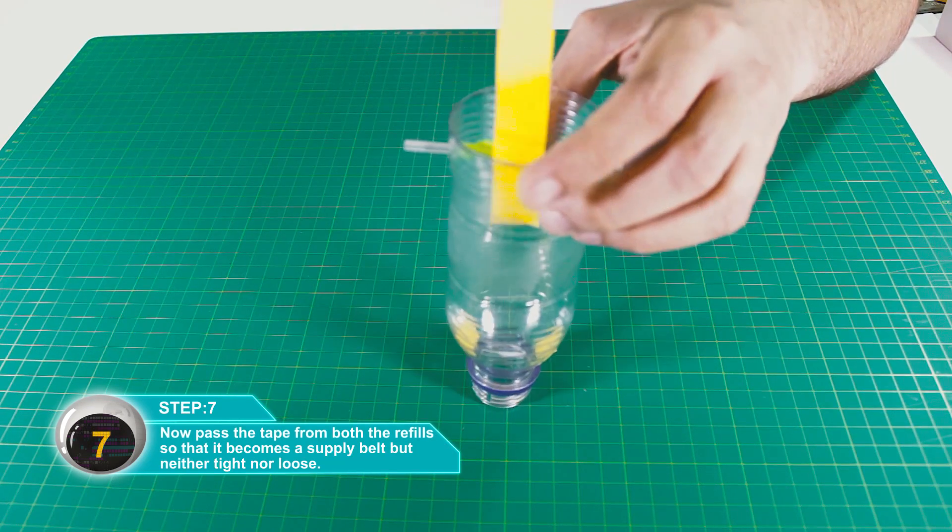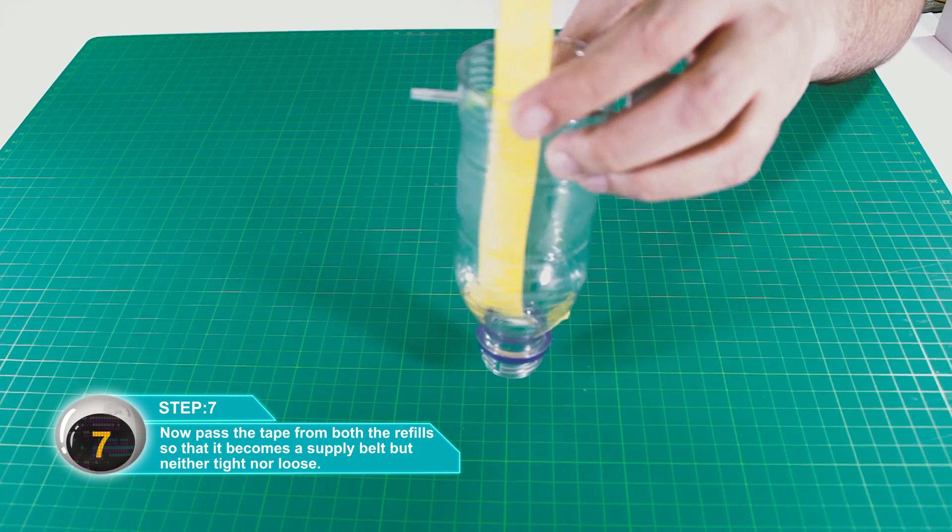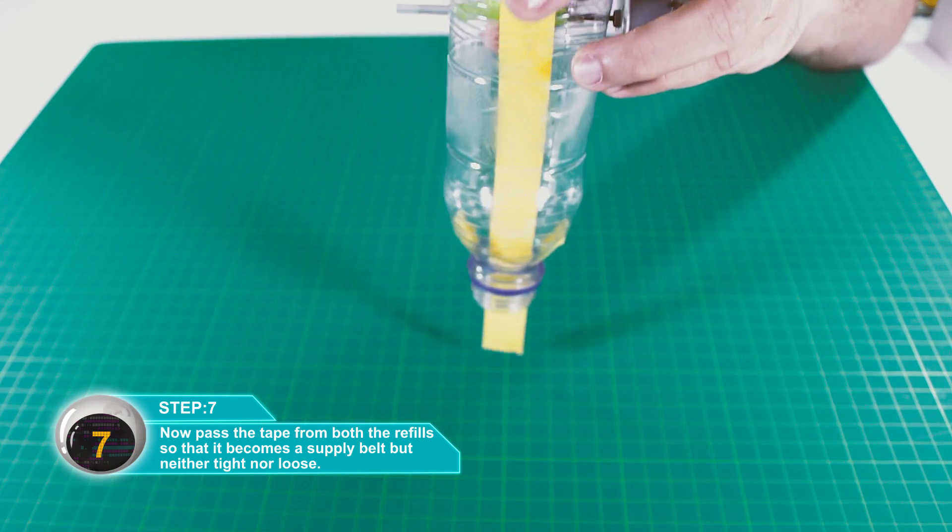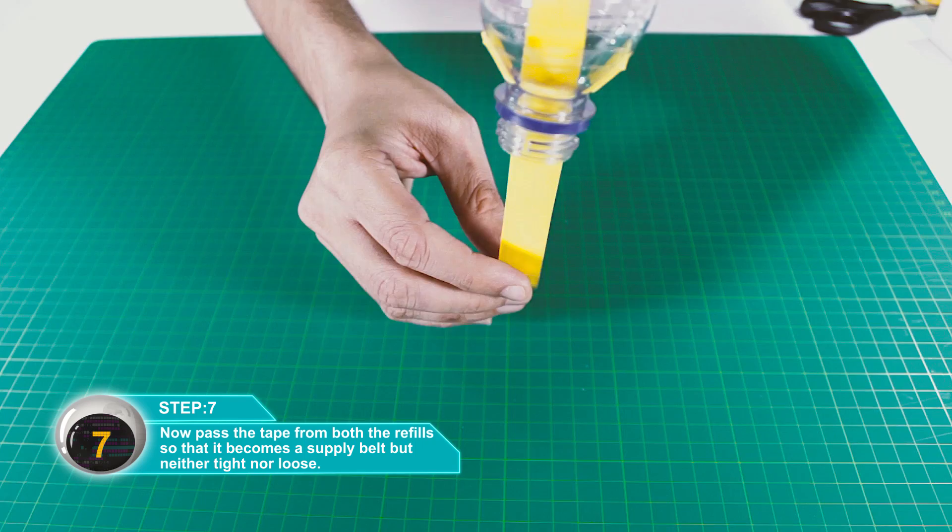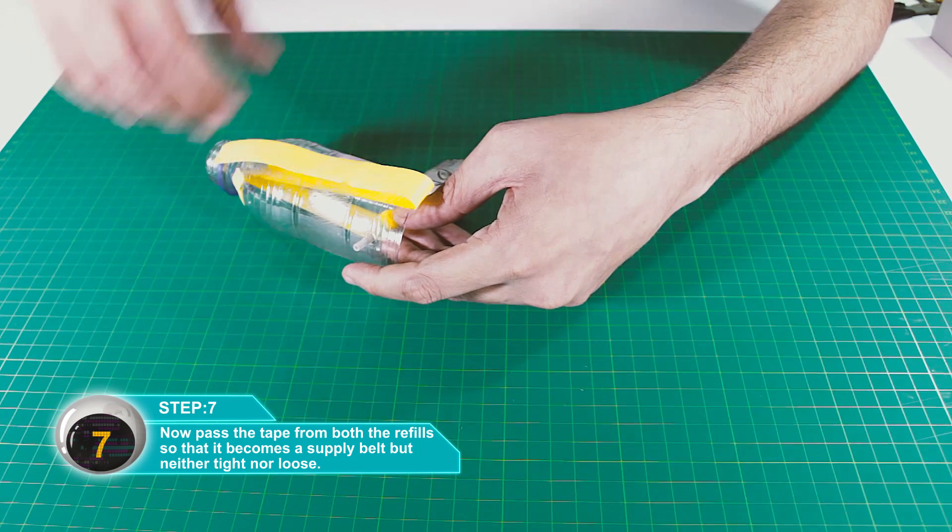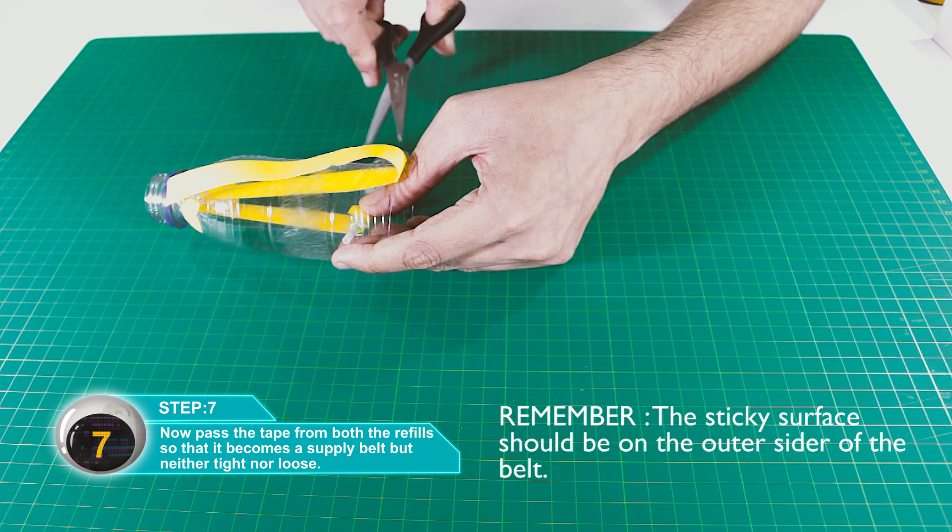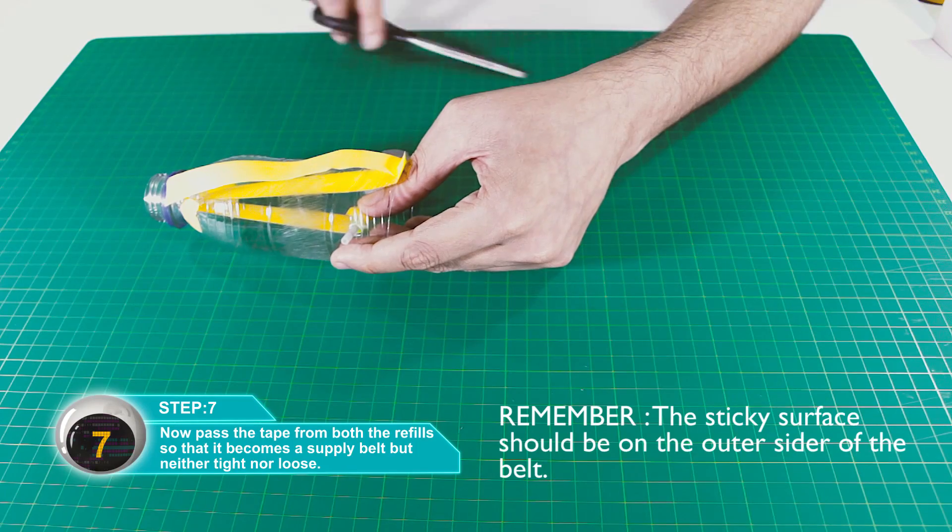Apply tape over both refills to create a supply belt - not too tight and not too loose. Make sure the sticky side of the tape that loops inside faces outward.